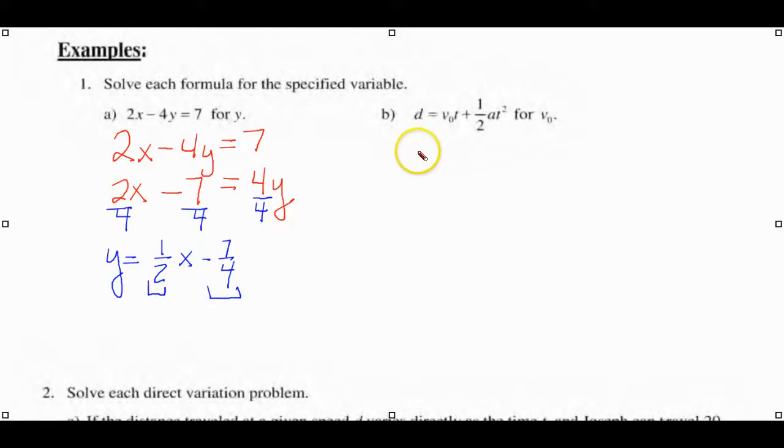Now in letter B I'll write that out large too so you can see it better. V sub O is one symbol that's for initial velocity. Now we're solving it for V sub O or initial velocity.